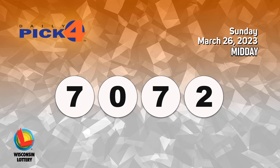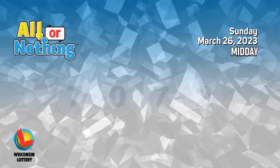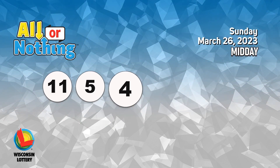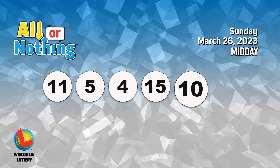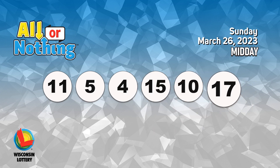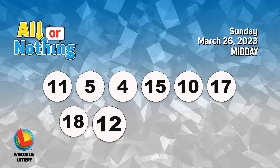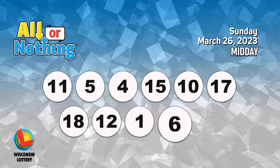The all or nothing numbers are eleven, five, four, fifteen, ten, seventeen, eighteen, twelve, one, six, three.